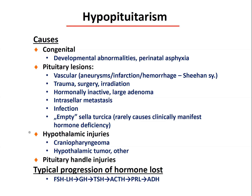In central hypopituitarism, there is a progressive hormone loss depending on cell sensitivity and target hormone lifespan. In adults, the most striking clinical symptoms first arise from FSH and LH absence — menstrual cycle or reproductive function is altered. In children, growth hormone deficiency is the sensitive early indicator; linear growth problems can be the first sign before puberty. Later losses follow in sequence: thyroid gland, then adrenal gland, then prolactin, then ADH.